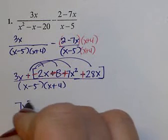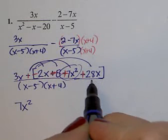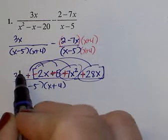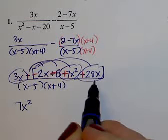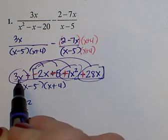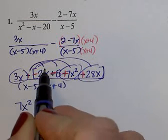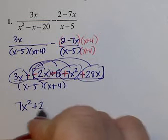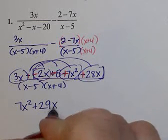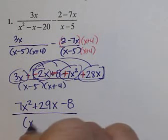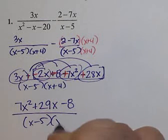7x squared, it's the only x squared. I have a positive 28 and a positive 3. So positive 28x and positive 3x is 31x. 31x subtract 2 would be positive 29x. Subtract 8 all over x minus 5 and x plus 4.